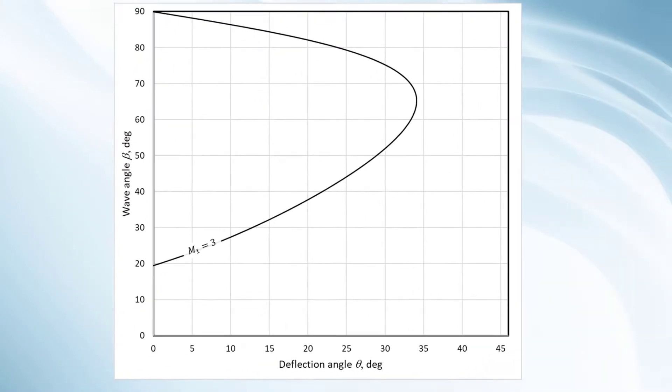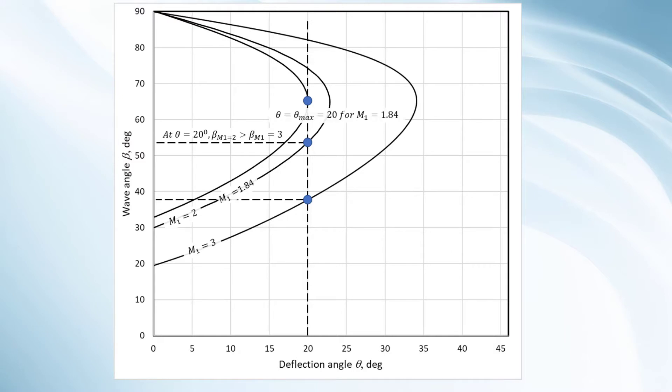For a fixed value of deflection angle theta, the weak solution shock angle is inversely proportional to the upstream Mach number. At upstream supersonic Mach number below which no weak solutions are possible, the deflection angle will correspond to the maximum possible deflection at this Mach number. Going further below this Mach number will result in a shock that is not attached to the object anymore and is called the detached shock.